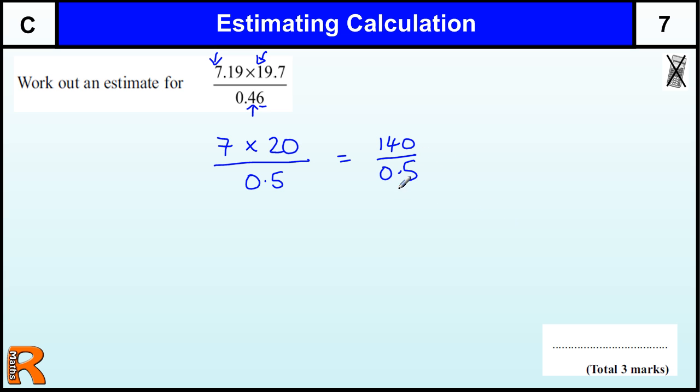And now trying to attempt to do this division, dividing by 0.5, quite often people just end up doing dividing by 2 rather than 0.5, because you get a bit confused with that, so they end up putting the answer as 70.